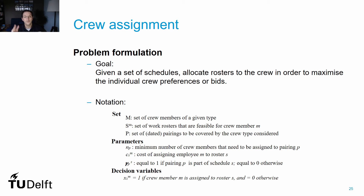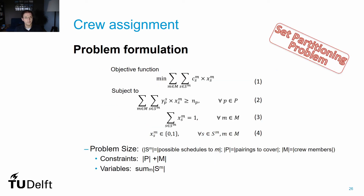Focused on the rostering problem, we need three types of sets: the set of crew members being considered, the set of feasible rosters built and presented to the crews, and the set of pairings to be covered. Decision variables are again binary, referring to the assignment of a roster to a crew member. We also need to know the set of crew members needed to cover each pairing — for instance, in the case of the cabin crew problem, a pairing may require more than one crew member. This crew rostering problem is also classified as a set partitioning problem, very similar to the crew pairing problem, but now allocating rosters to crew instead of allocating pairings to flights. The objective is to minimize the cost of allocating specific rosters to individual crew members, while the constraints relate to the number of crew members needed per pairing and the fact that each crew member must receive one roster, even if it is an empty roster.